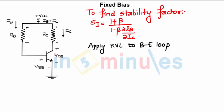Now the next step is to find the stability factor. For stability factor, you know the equation Si is 1 plus beta upon 1 minus beta into dIb by dIc. So what we need to find out, we need to find out this term. Once we know this term, we can substitute the value and we can find the stability factor.